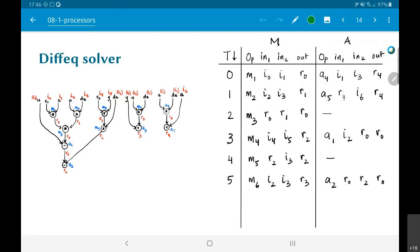And A2 takes as input R0, which is coming from A1 and R2, which is coming from M5, does the subtraction in this case, and stores the result in R0.